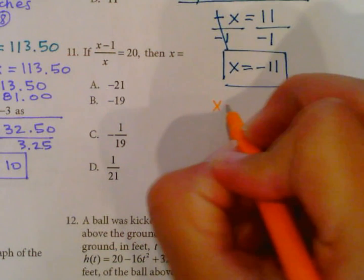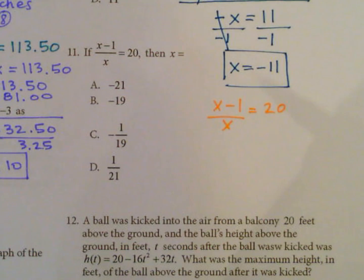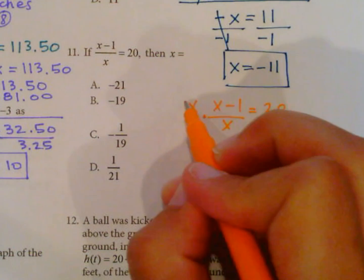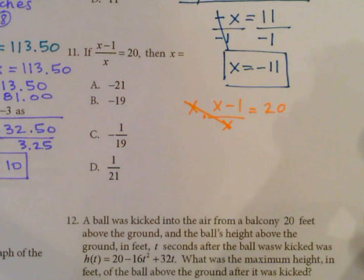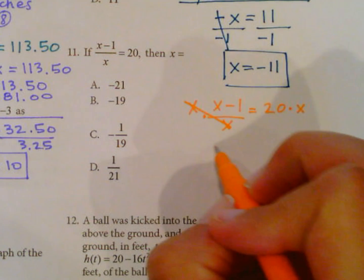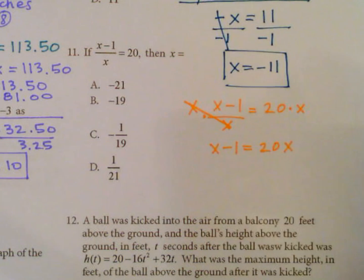So x minus 1 over x equals 20. In order to get x out of the denominator, I need to multiply by x so that these will reduce to 1. Now that the denominator is gone, of course whatever on one side I have to do on the other. So now I have x minus 1 equals 20x.